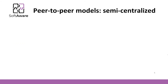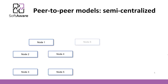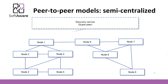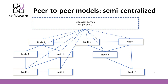An alternative peer-to-peer architectural model is semi-centralized architecture. Within the network, one or more nodes act as superpeers to facilitate communication, which has the effect of reducing traffic between nodes. In a semi-centralized architecture, the role of the superpeer is to help establish contact between peers in the network, or to coordinate the results of a computation.